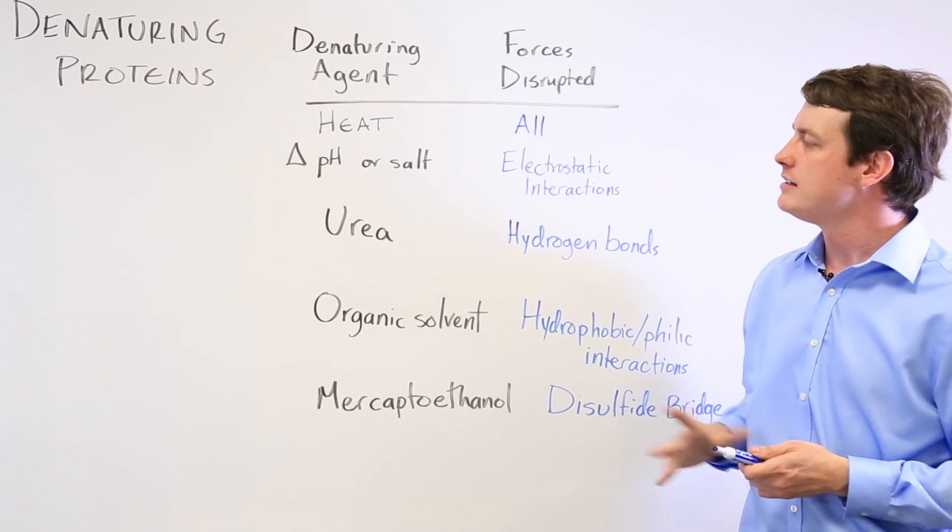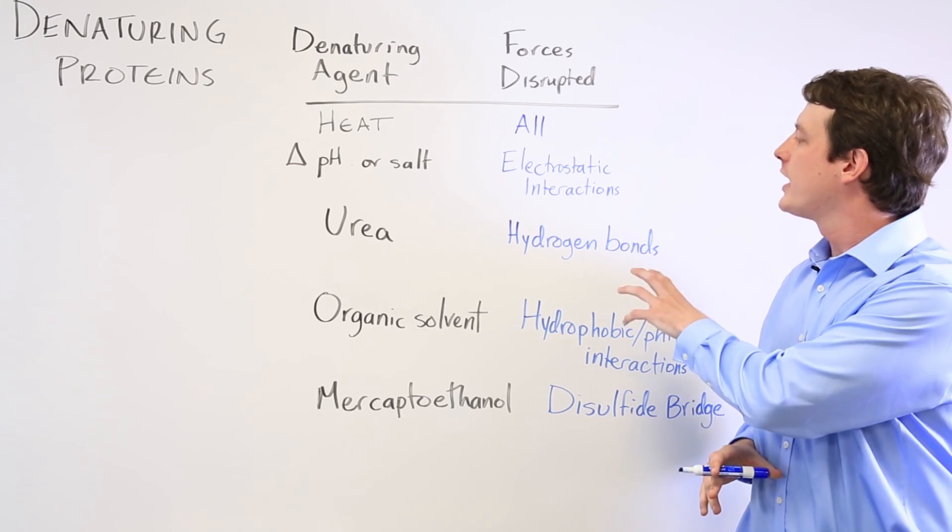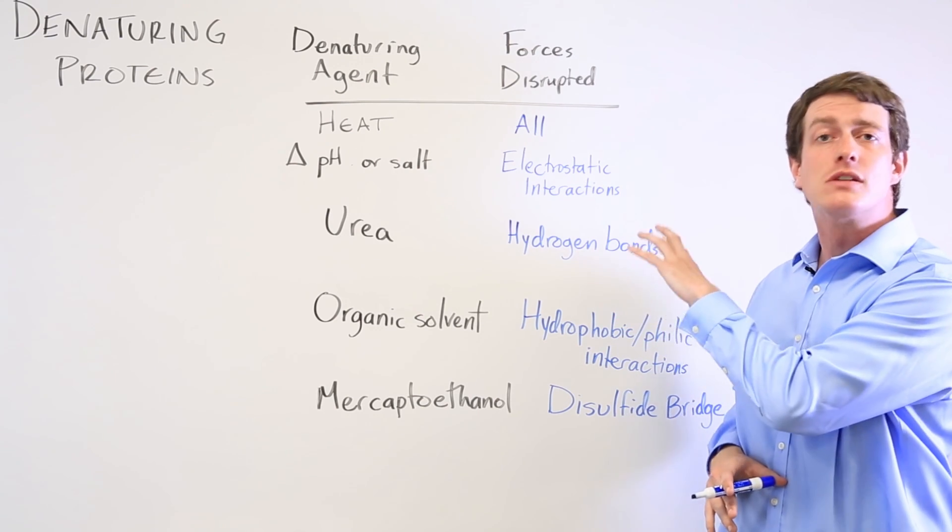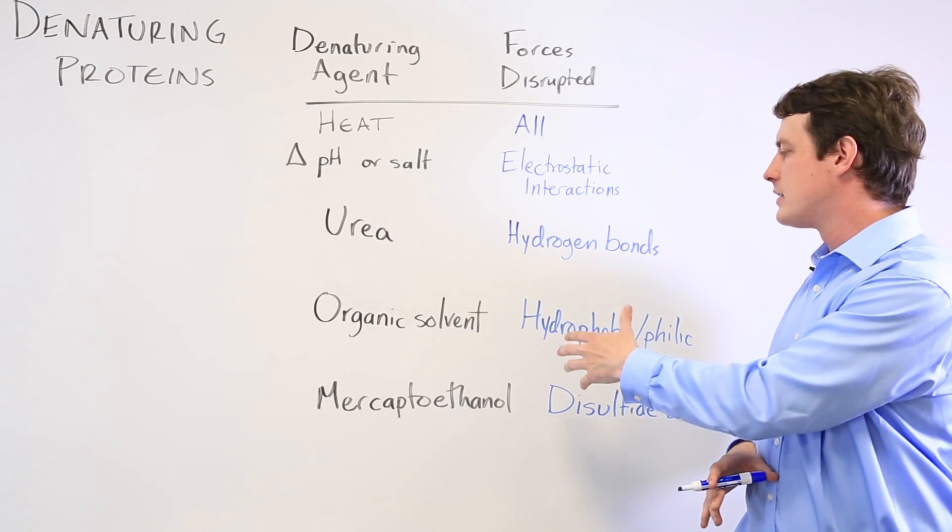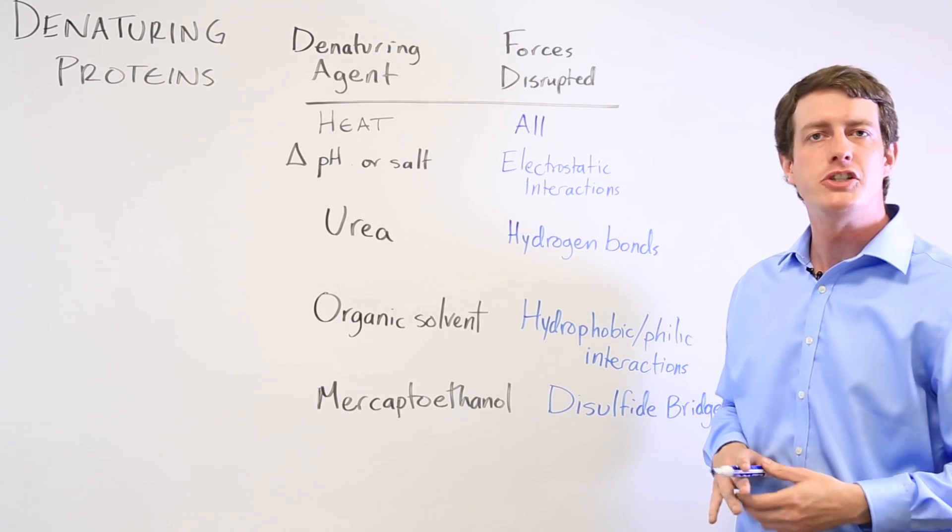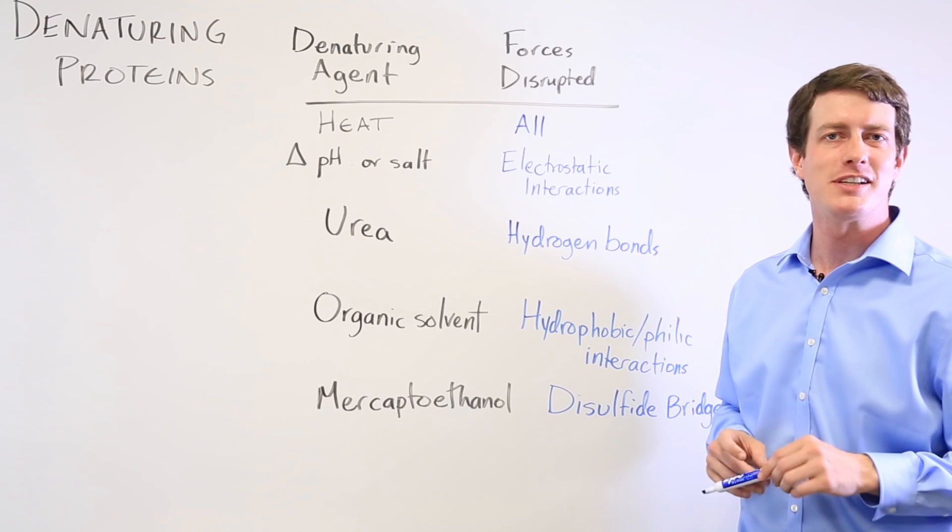And these are the five things that can denature proteins. So recognize when something like a hydrogen bond is contributing to the secondary structure versus mercaptoethanol which is disrupting the disulfide bridges that anchor the tertiary structure of that protein.